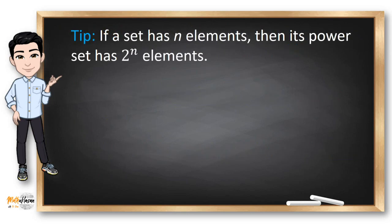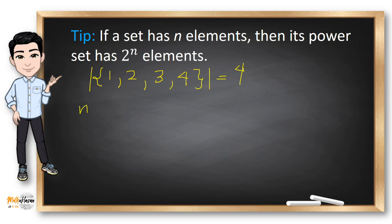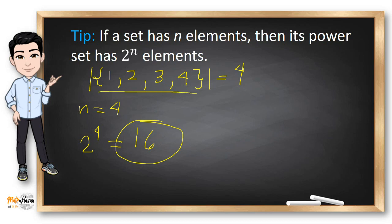Here's a tip if you want to know the number of subsets in a given set: if a set has N elements, then its power set has 2 raised to N elements. So if you want to find the possible subsets of {1, 2, 3, 4}, find its cardinality, which is 4. So N equals 4, and using the formula 2 raised to 4, the answer is 16. Meaning there are 16 possible subsets for the set {1, 2, 3, 4}.